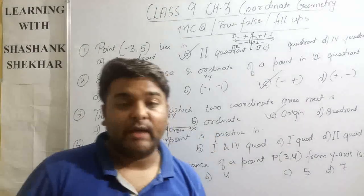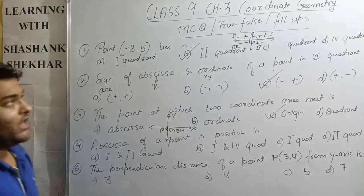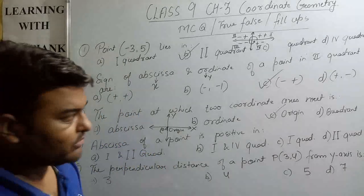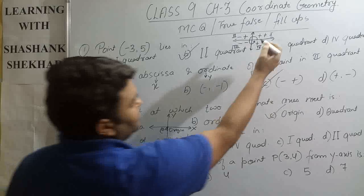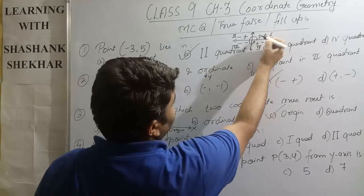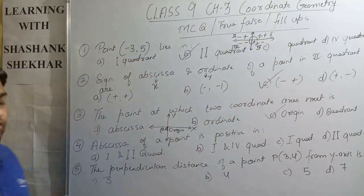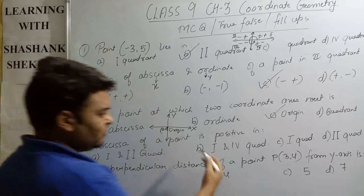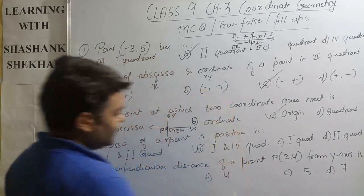Question four: abscissa of a point is positive in which quadrant? Abscissa means x-coordinate. The x-coordinate is positive in the first quadrant and in the fourth quadrant. So the answer is first and fourth quadrant, and option B is correct.